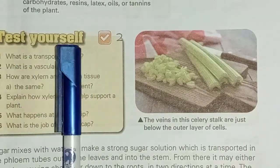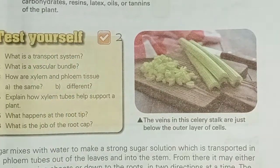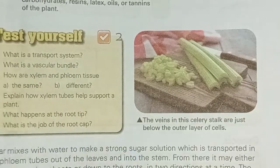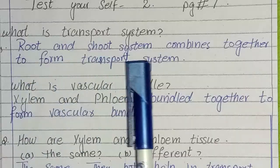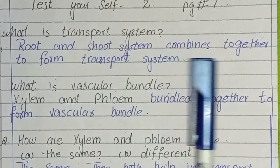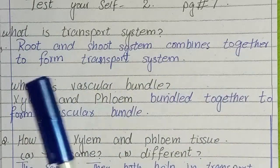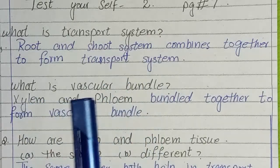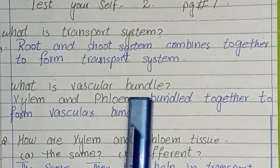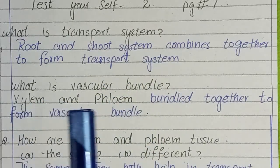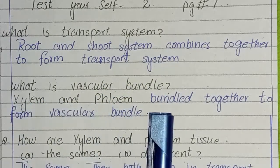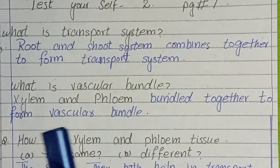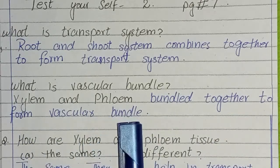Page number 7, second Test Yourself. First question: What is a transport system? Answer: Root and shoot system combine together to form the transport system. Second question: What is a vascular bundle? Answer: Xylem and phloem bundled together form the vascular bundle.